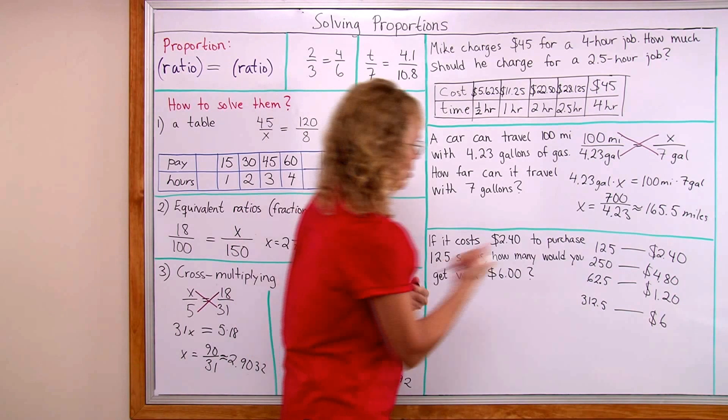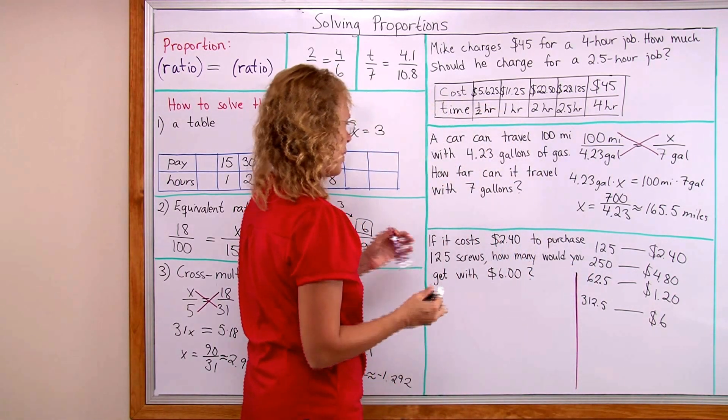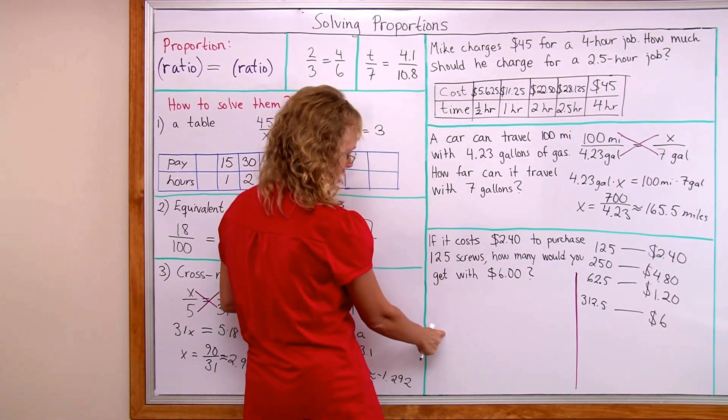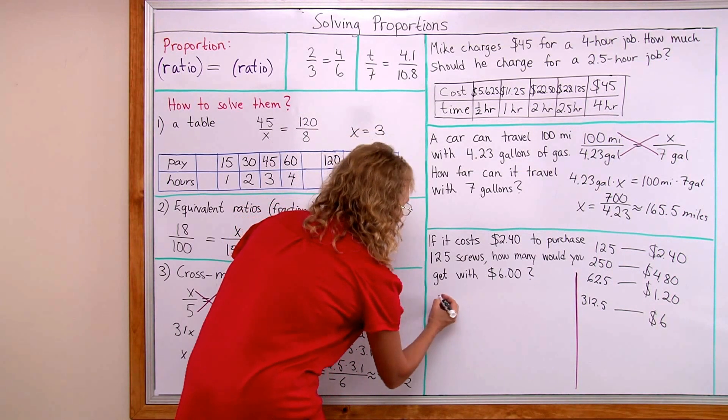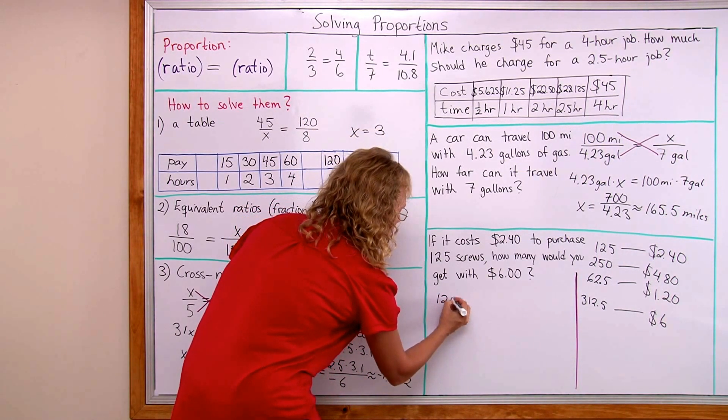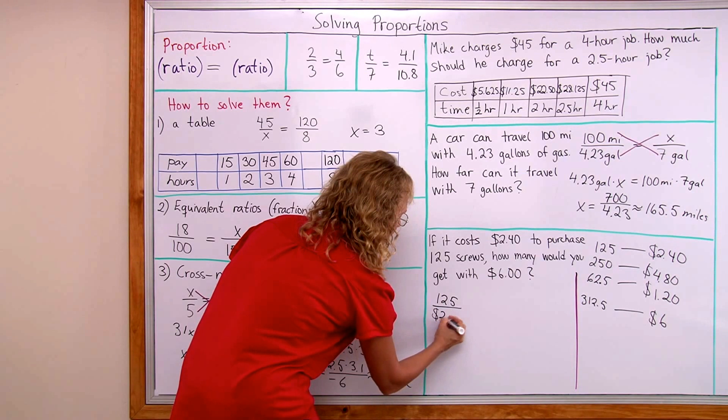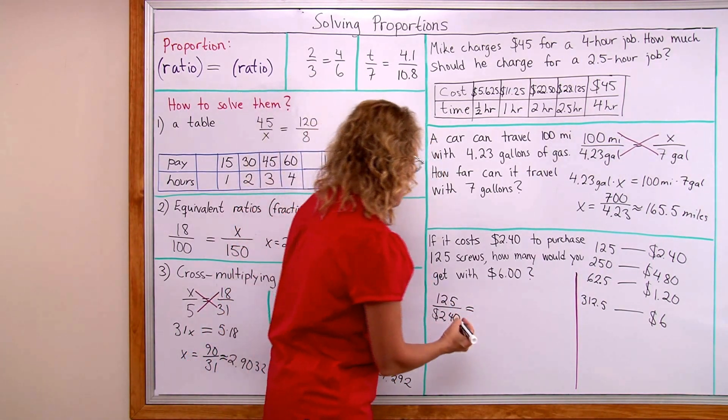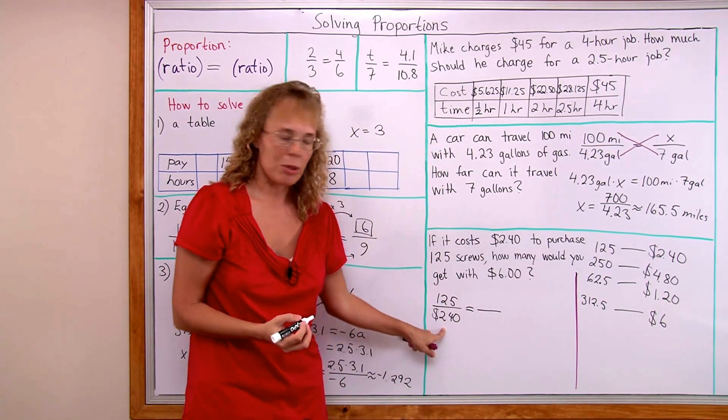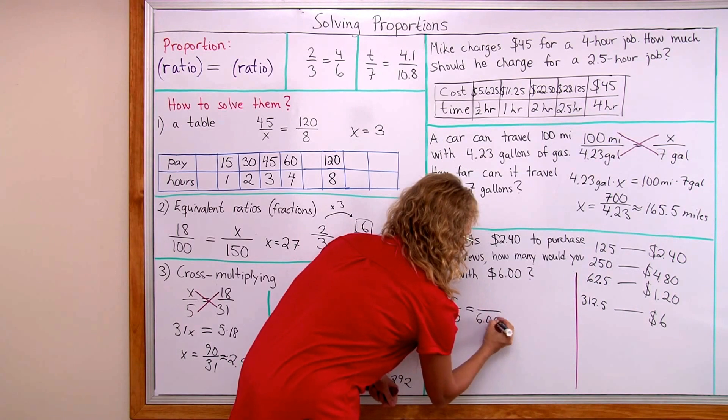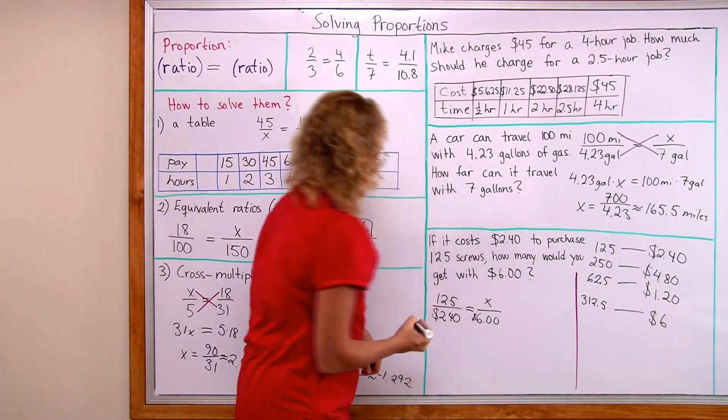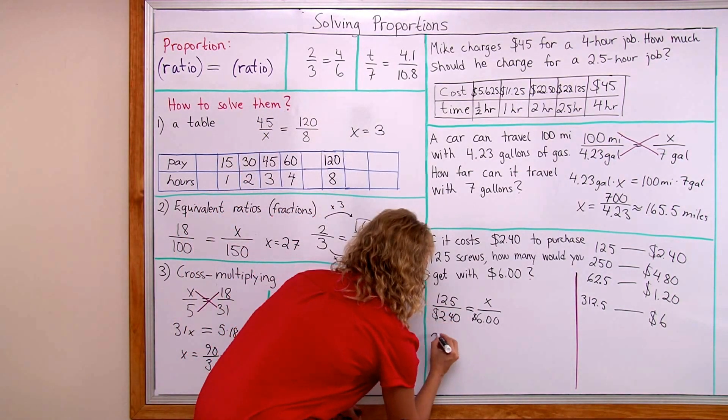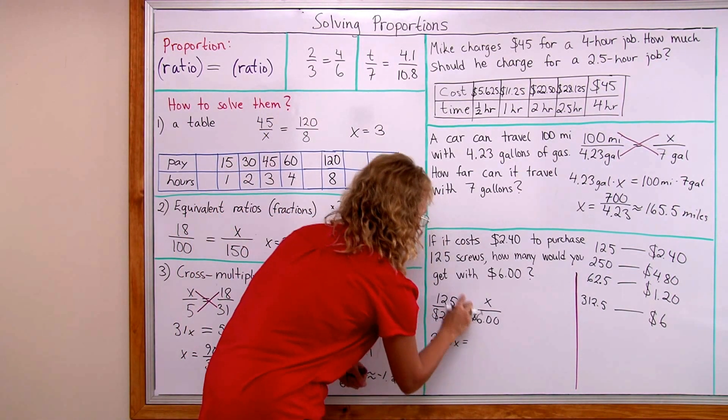And now also I'm gonna write a proportion. If I write a proportion I can put either screws per dollars or dollars per screws. Either way it will work. Of course it's normal to put screws per dollars, right? It's more usual. But it won't matter which way you do it. And then over here you just have to put, since the money amount is on the bottom, put the money amount here on the bottom too, on this side. And then your unknown. So I will cross multiply 240 times x equals six times that. Like that.